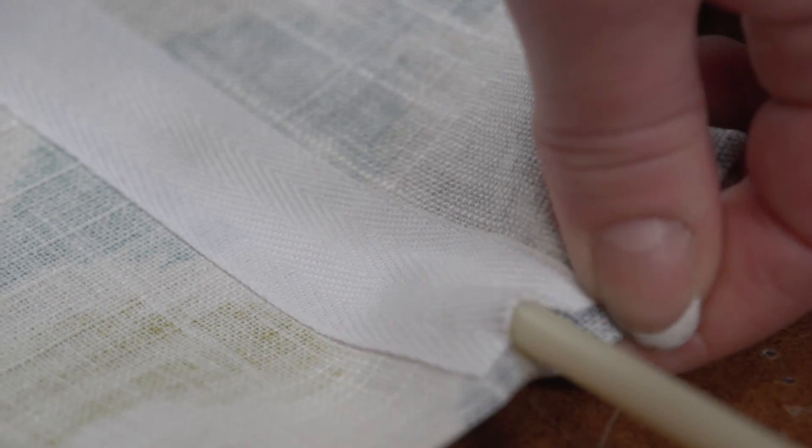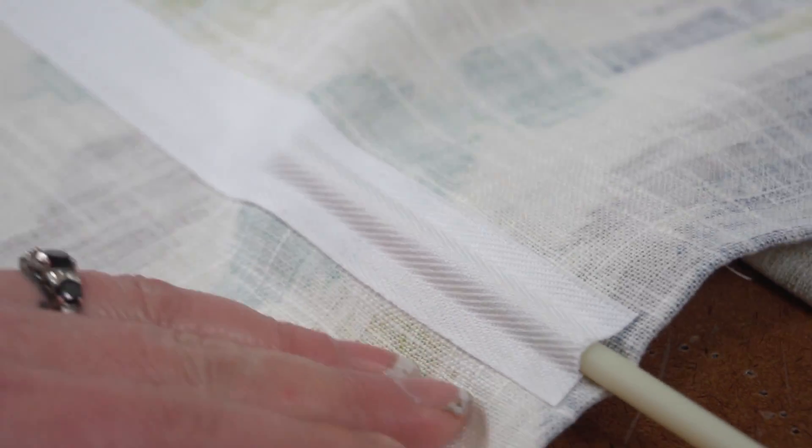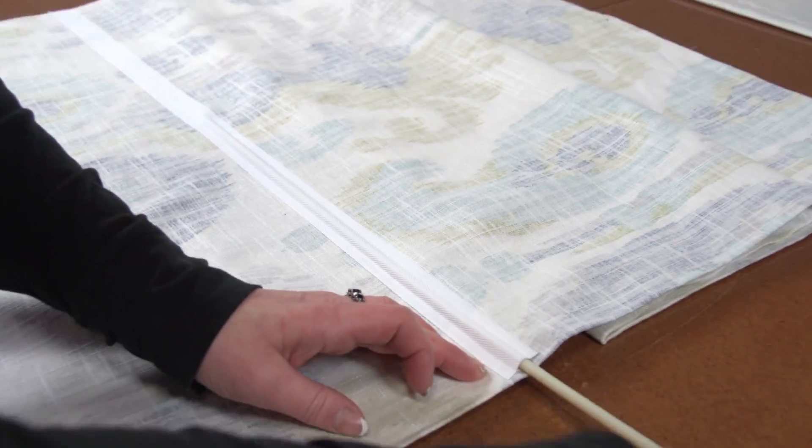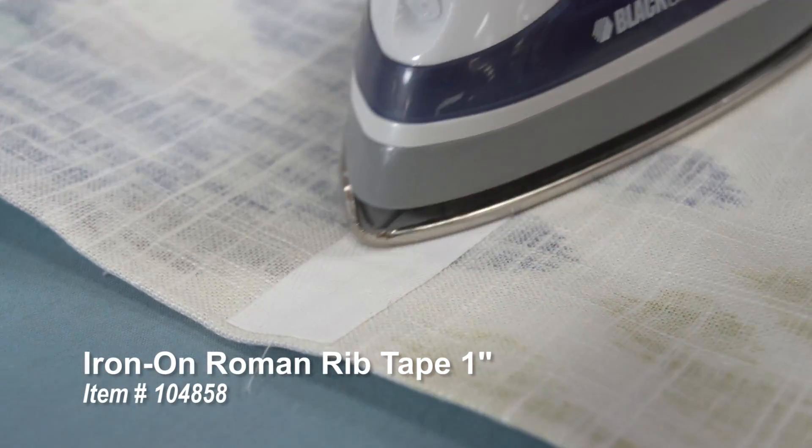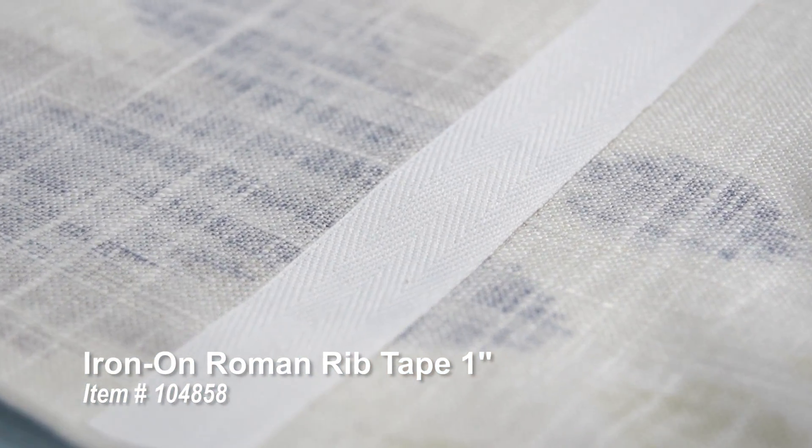These ribs can be placed in the small tuck or pocket on the front or back of the shade. They are also designed to work with the iron on Roman Rib Tape, sold separately.